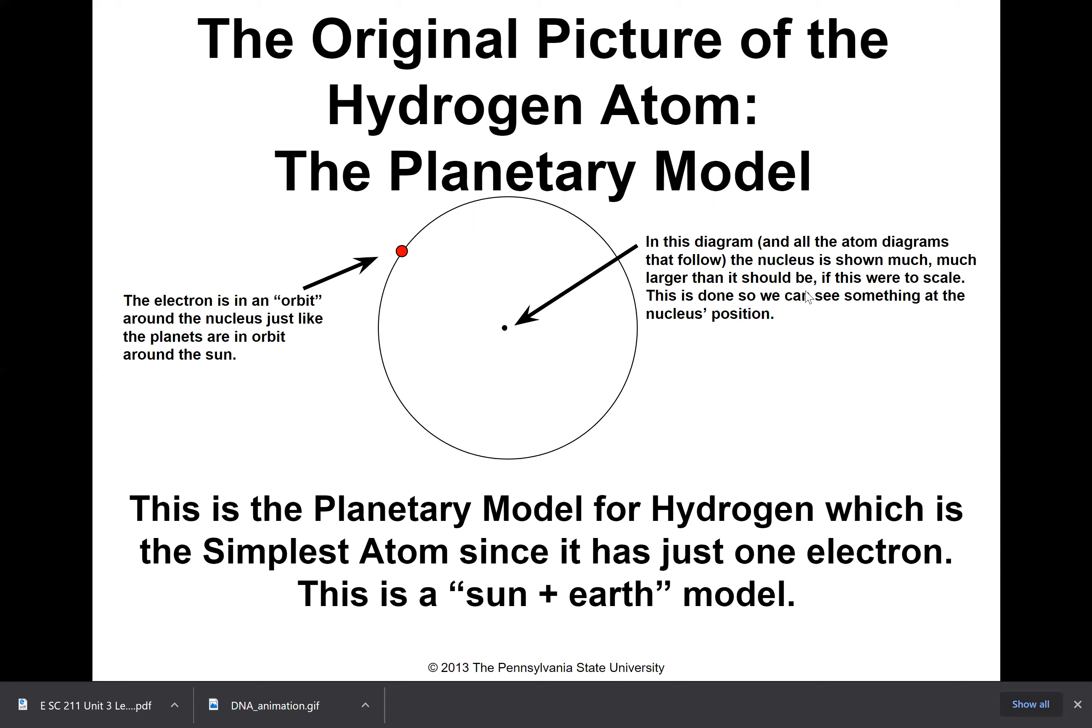I should also make a note that in this diagram and all the atom diagrams that follow, the nucleus is shown much, much larger than it should be. Because if this were to scale, you wouldn't be able to see the nucleus because it'd be so small, it would be invisible to the naked eye. So this is called the planetary model, and in chemistry I use this model a lot, not because it's as accurate as possible, but because it's easier to conceptually understand and draw. It has recently accurate concepts associated with it, but it is not the most accurate model.